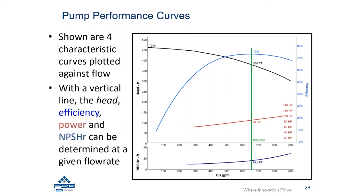Where the red line — representing horsepower — crosses the vertical line, it indicates this pump will require 86 horsepower. Down at the NPSH required curve, this pump would require 16.4 feet of suction head to ensure it is not cavitating. This is how you read a centrifugal pump performance curve. If you want to determine performance at a different flow rate, simply go to that flow rate and create another vertical line to read all the curve characteristics.